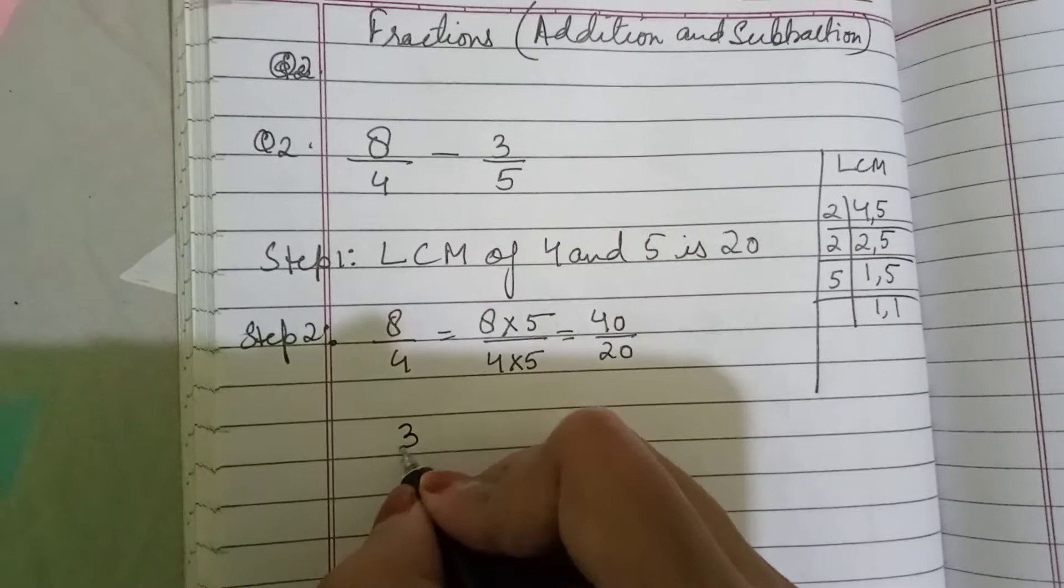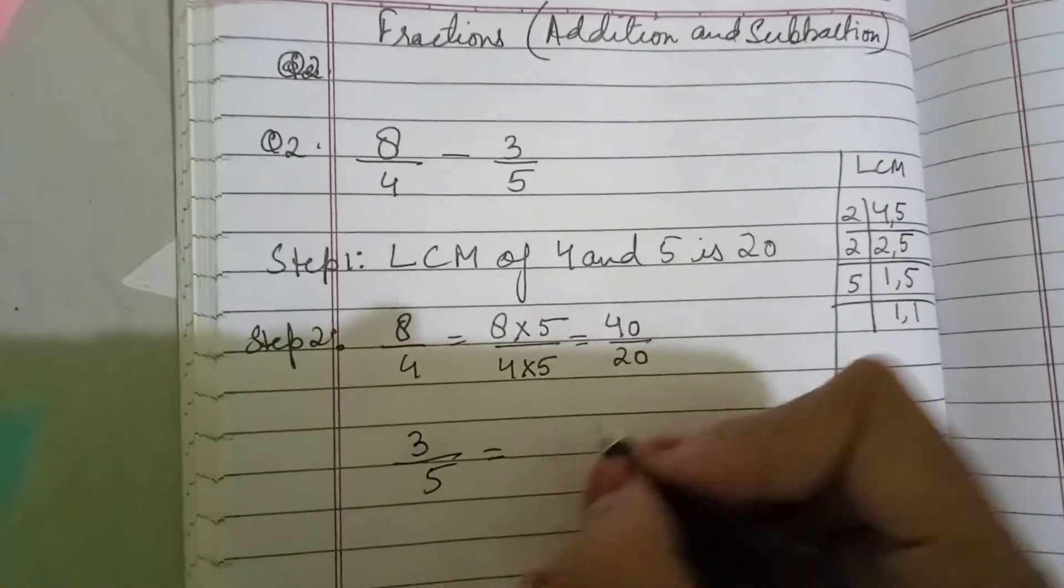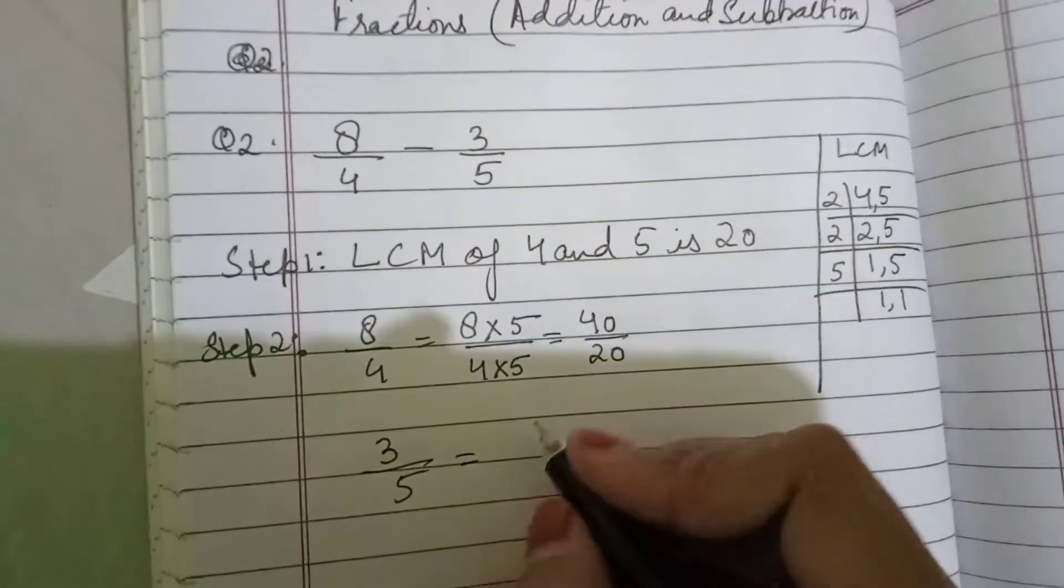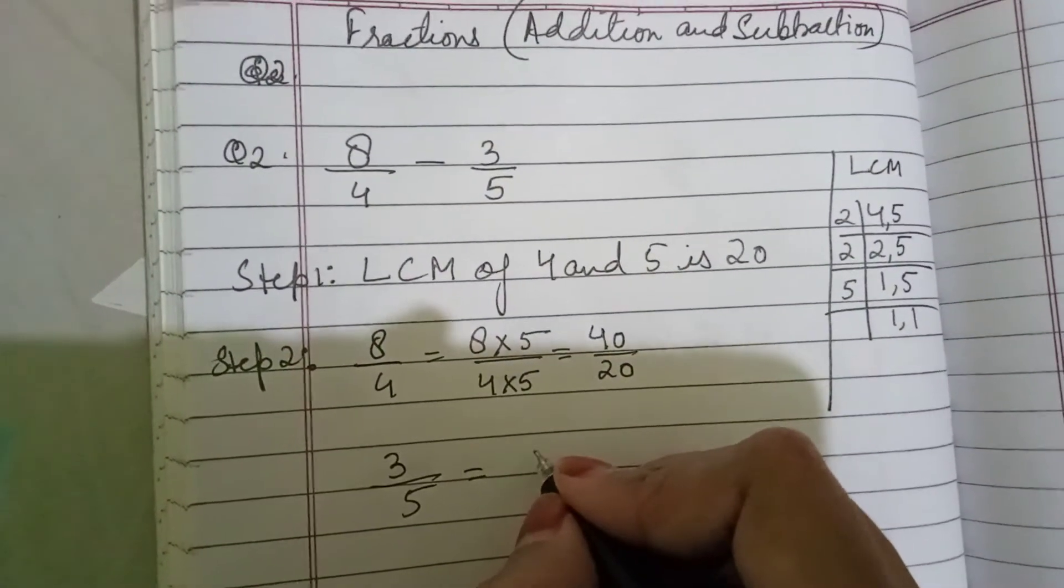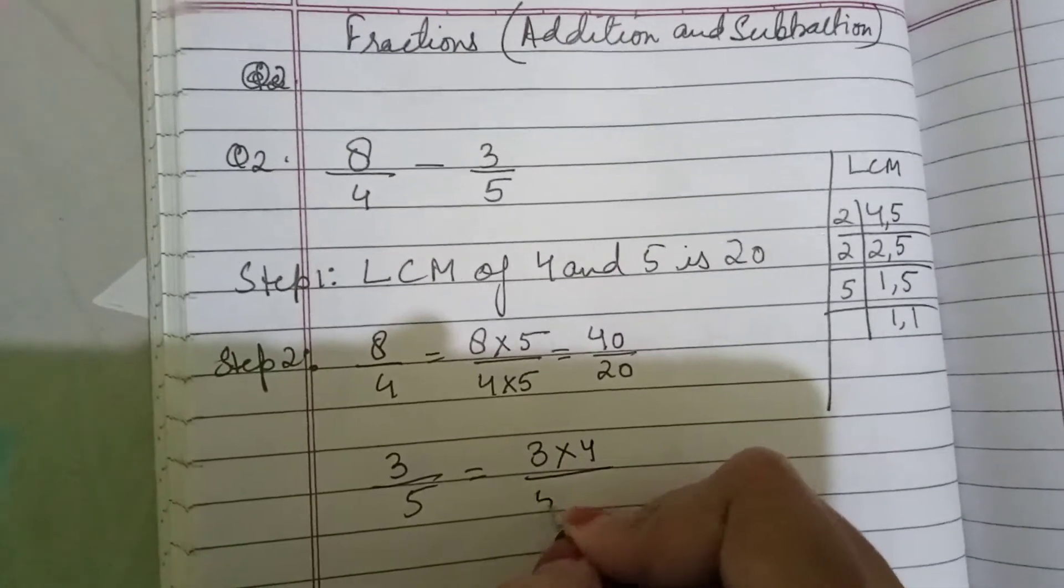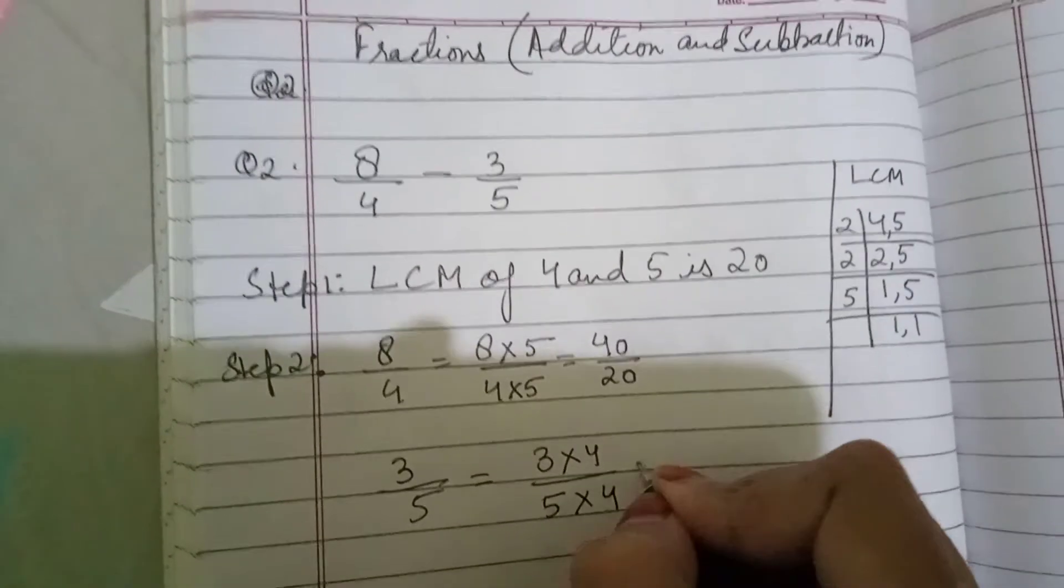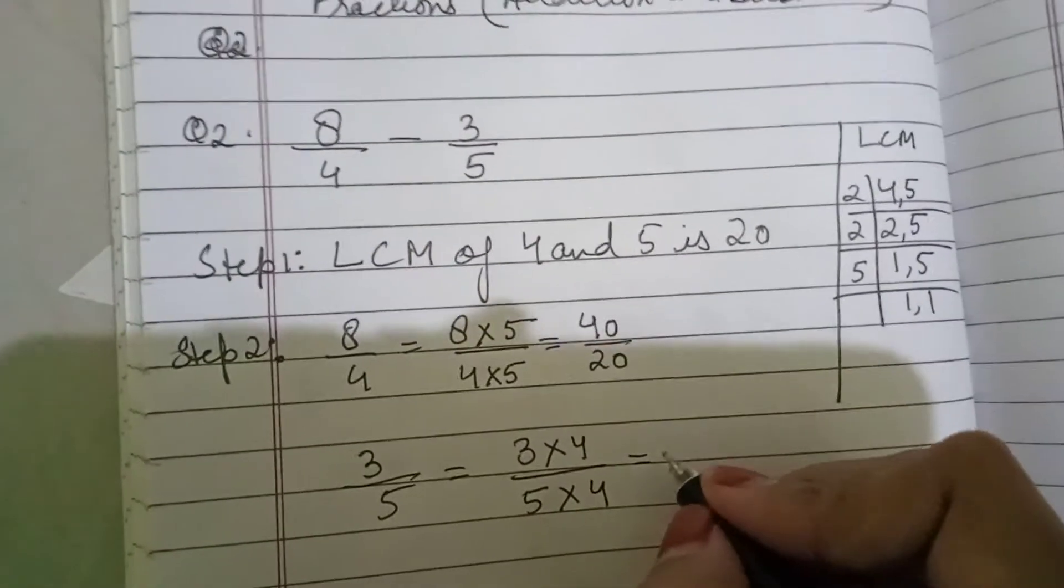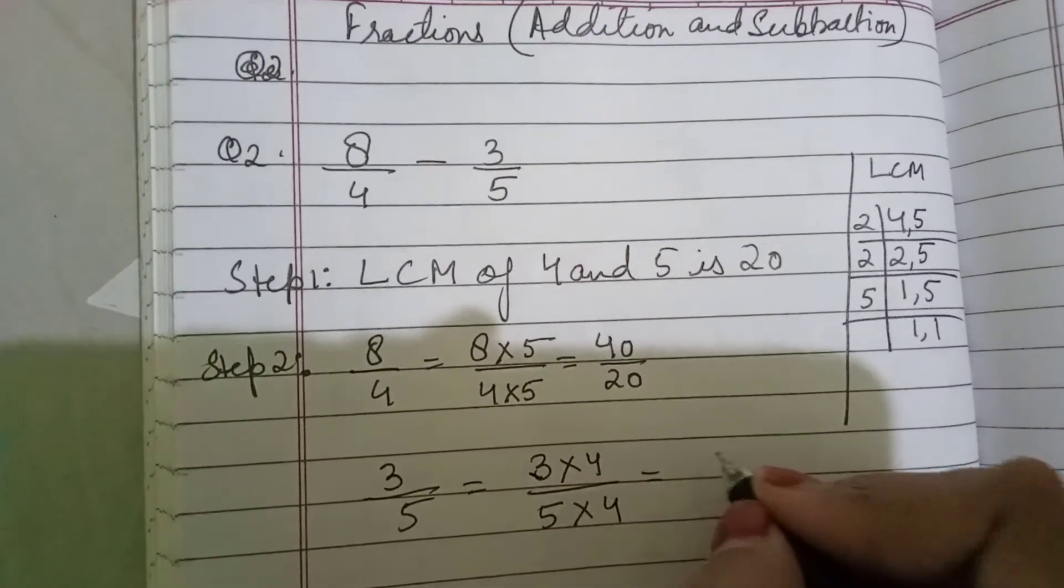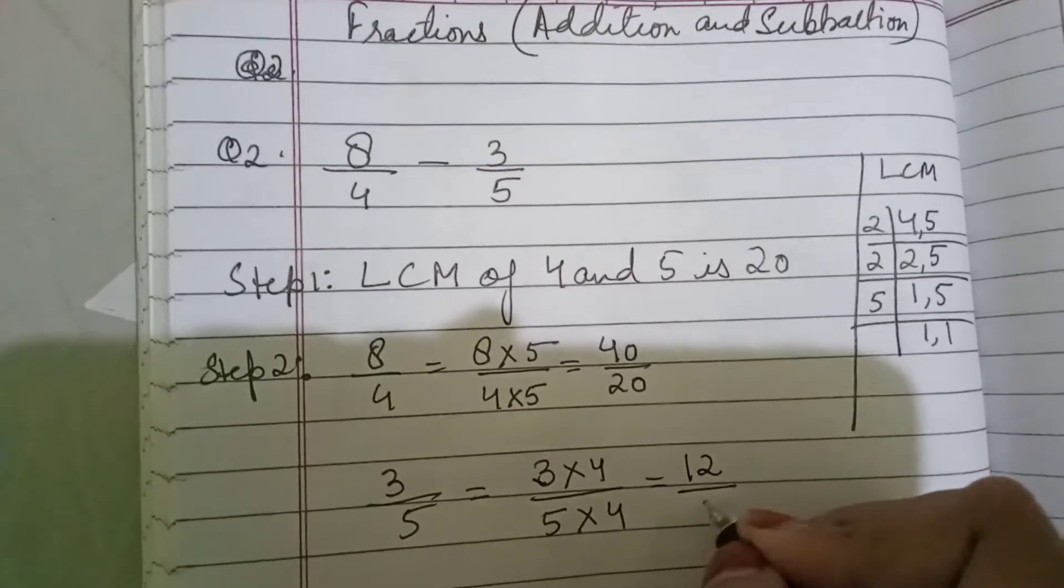We will do same for 3 by 5 also. How many times? 5 will go 4 times. 3, again the number of times you are multiplying the denominator, the same number of times we will multiply the numerator also. So, 3 fours are 12 and 5 fours are 20.